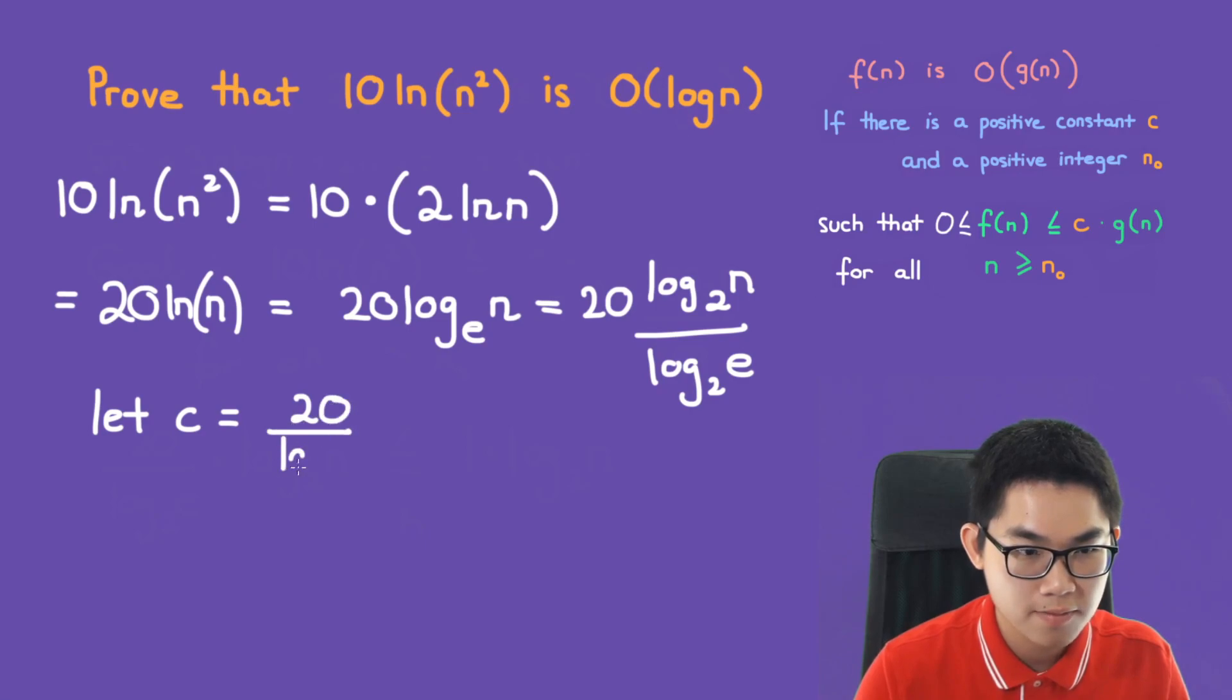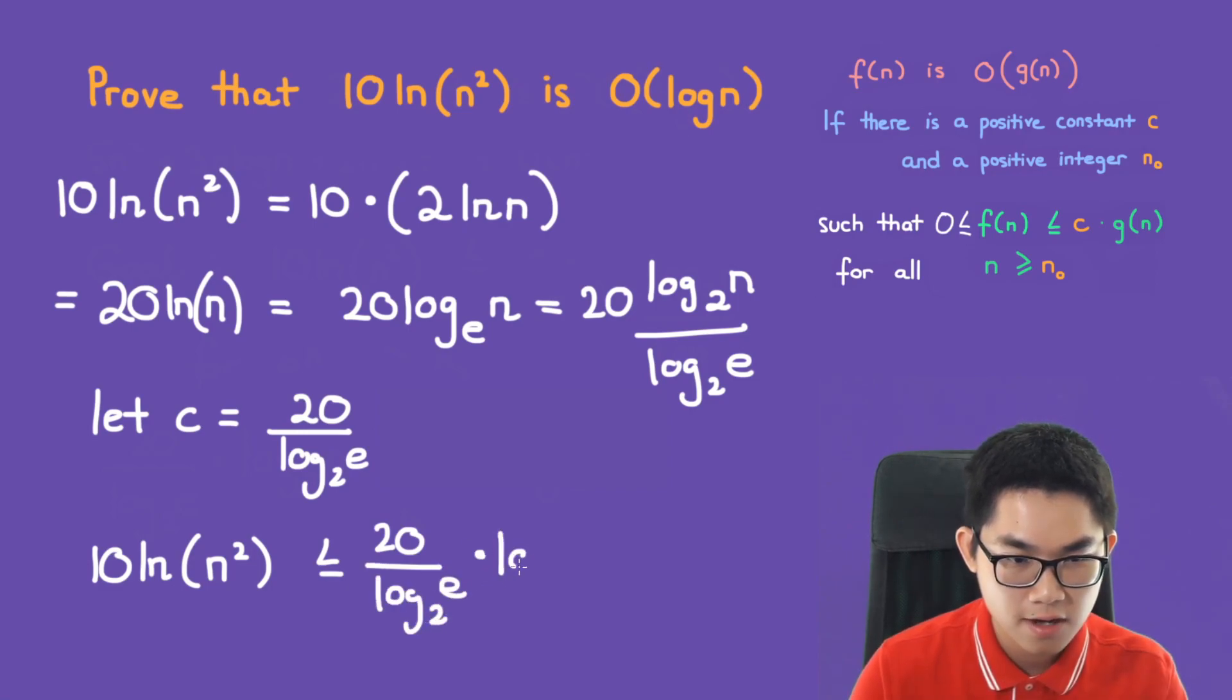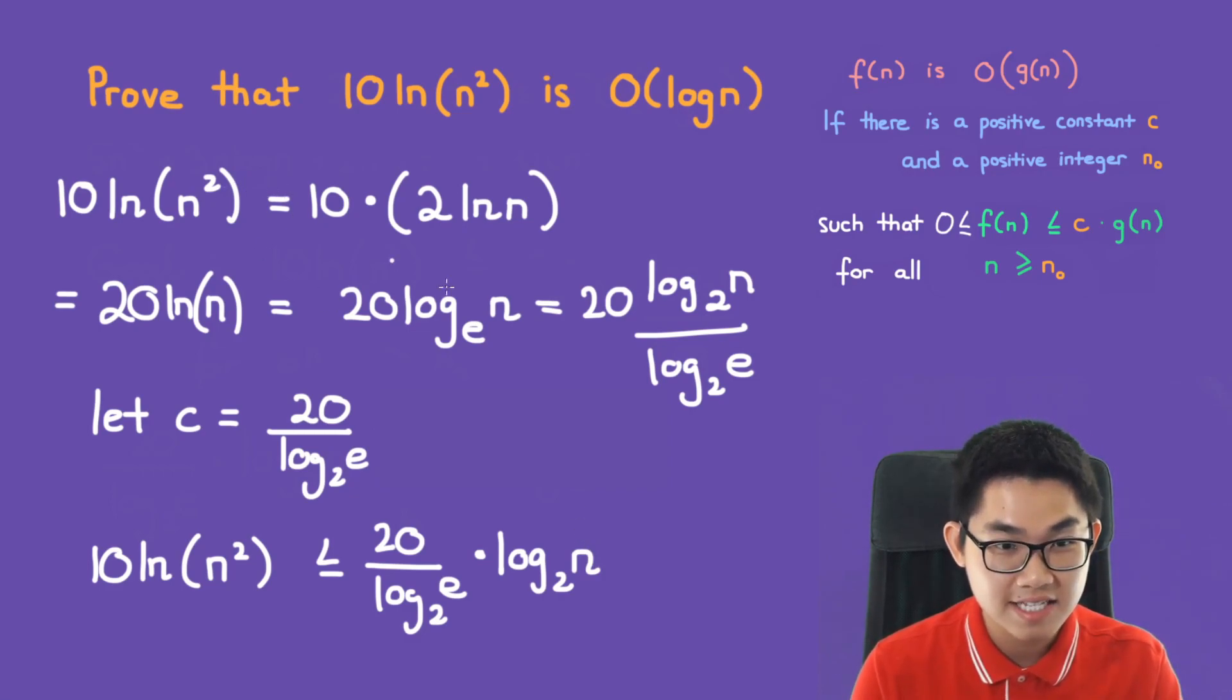Let c equal to 20 over log base 2 of e. So this means that 10 times ln n squared is less than or equal to 20 over log base 2 of e log base 2 of n. And this works because this is equal to this, so it also means that it can be less than or equal to this.